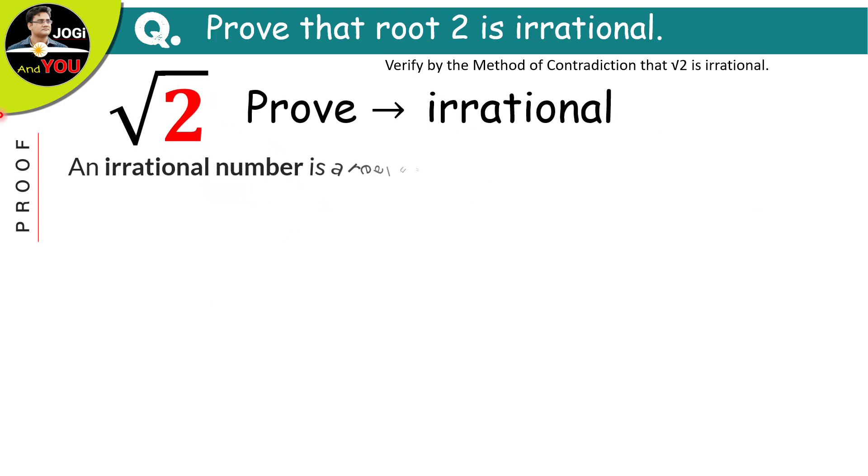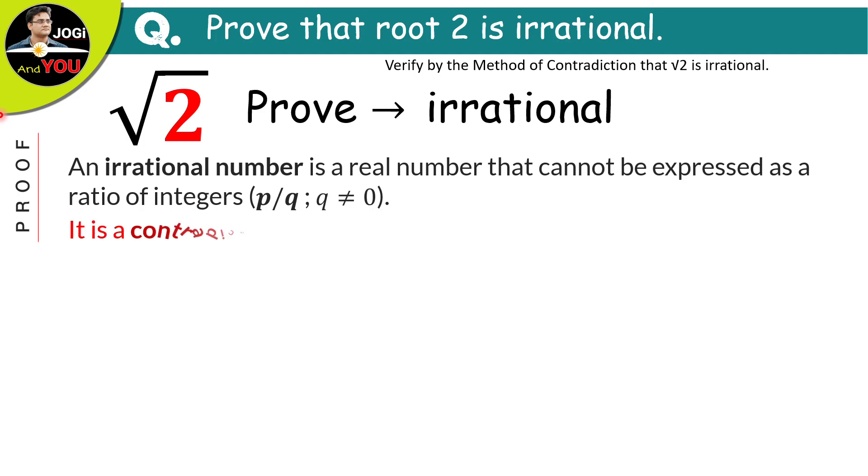An irrational number is a real number that cannot be expressed as a ratio of integers, i.e. p upon q. Another one is, it is a contradiction of rational numbers.